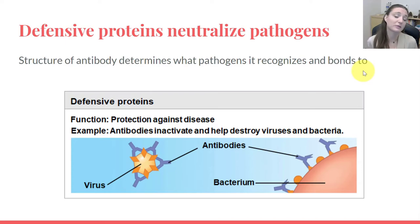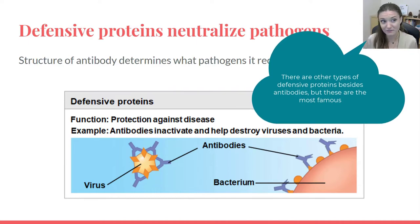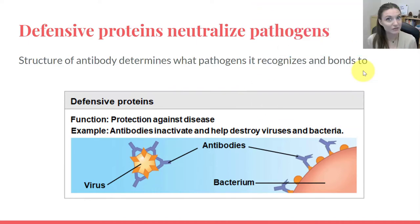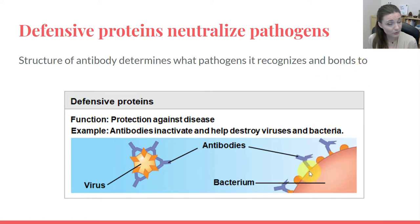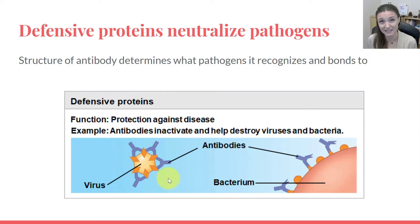Defensive proteins are proteins that most vertebrates have to help neutralize pathogens. We know defensive proteins as antibodies. Antibodies are proteins that have a very specific shape that will bond to proteins on the surface of either a virus or a bacterium, or maybe a fungus or something else trying to invade us and cause disease. That antibody will bond to the bacterium or the virus — the disease-causing agent — and neutralize it, basically flagging it so it will be cleaned up by the immune system.